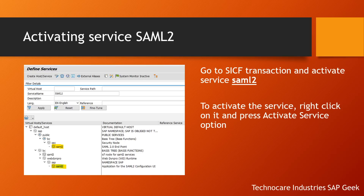The prerequisite is to activate the SAML2 service in SICF. In the service name we have to write SAML2, execute, and then right-click on this service and activate it. This is the first step.